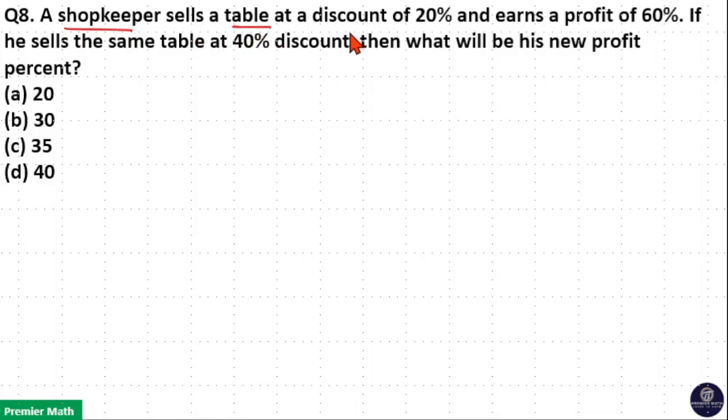A shopkeeper sells a table at a discount of 20% and earns a profit of 60%. If he sells the same table at 40% discount, what will be his new profit?